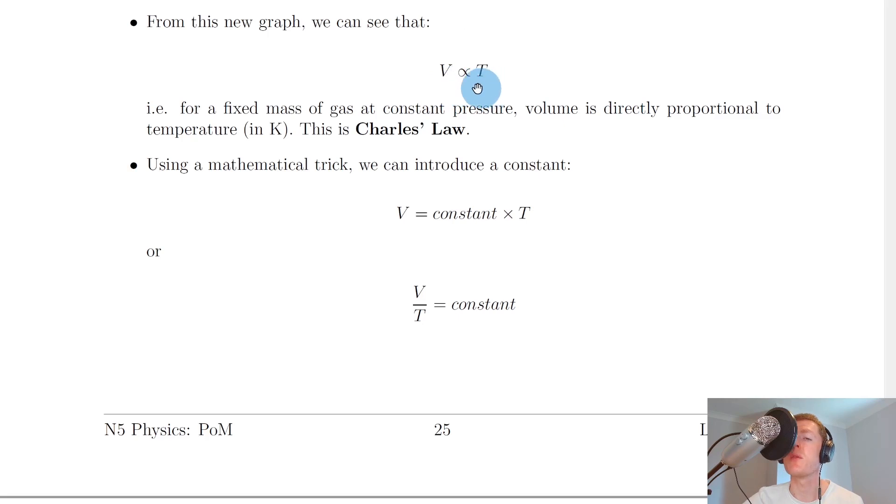So this was it in symbol form, V is directly proportional to T, and this was it in word form. So remember all this means is that as temperature increases, volume increases as well, or as temperature decreases, volume decreases as well.